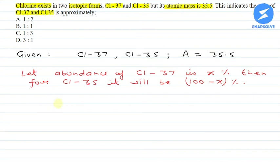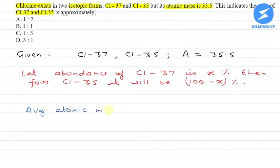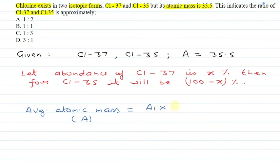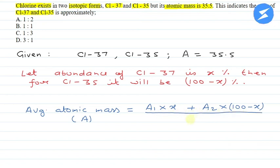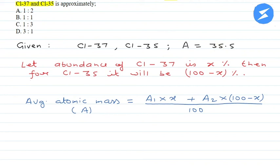अब हम average atomic mass का formula use करेंगे। Average atomic mass (A) = (a1 × percentage abundance of isotope 1 + a2 × percentage abundance of isotope 2) / 100. Here a1 is the mass of Cl-37 which is x percent, and a2 is the mass of Cl-35.